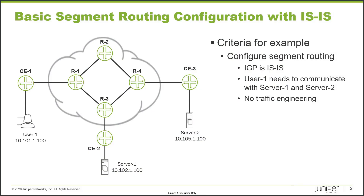Here is our example topology. We have a few different devices to talk about. R1, R3, and R4 are provider edge devices. R2 is just a P router — no customer device is connected to R2. CE1 has User 1 connected, CE2 has Server 1 connected, and CE3 has Server 2 connected.